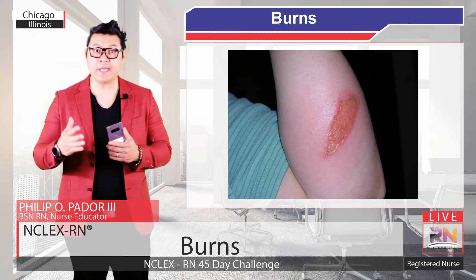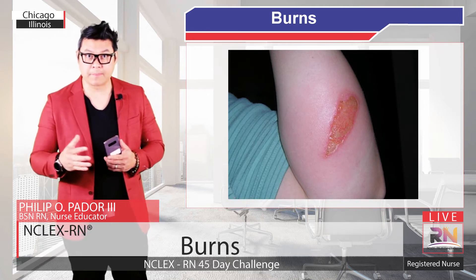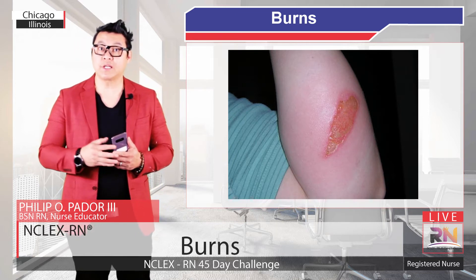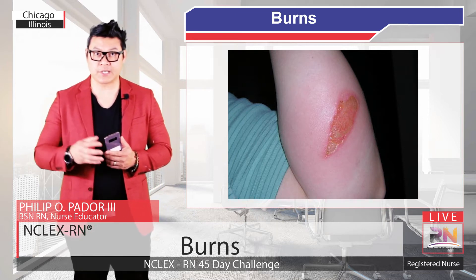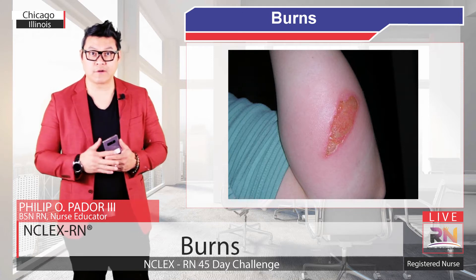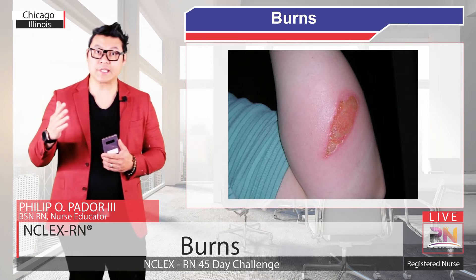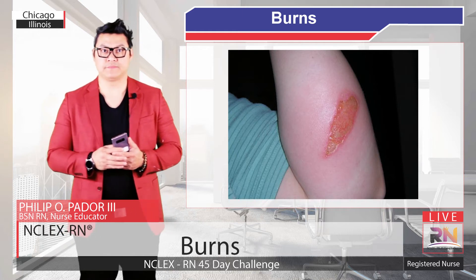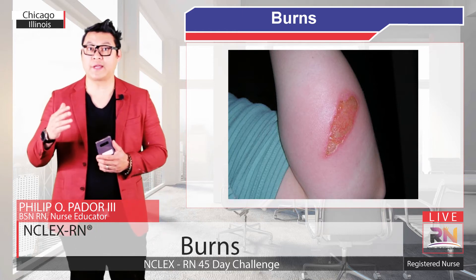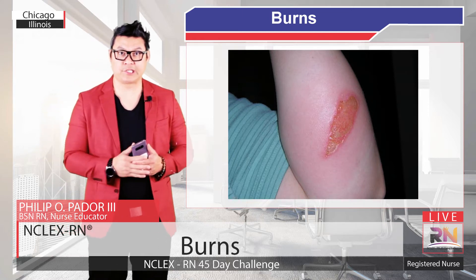Second degree superficial partial thickness burns can be red with clear blisters, wet as if they are weeping, and are even more painful than first degree burns, but still blanch. A second degree deep partial thickness burn may vary in color from yellow or white to red. Blisters can be wet or dry, and because of the damage to blood vessels and nerve endings, burns of this degree may not blanch.